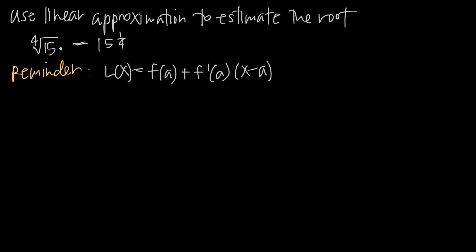The way we're going to do it is by finding a value close to 15 that has a fourth root that's easy to find, and then using that value to create a linear approximation equation. We realize that 16 has an easy fourth root: the fourth root of 16 is 2, because 2 times 2 times 2 times 2, or 2 to the fourth power, is 16. The fourth root of 15 isn't as easy — it's not a whole number — so we'll use the fourth root of 16 to create our linear approximation equation.